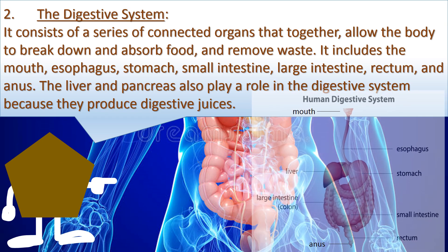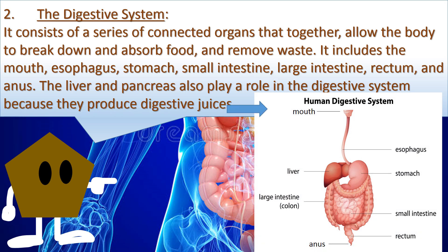2. Digestive system: it consists of a series of connected organs that together allow the body to break down and absorb food and remove waste. It includes the mouth, esophagus, stomach, small intestine, large intestine, rectum, and anus. The liver and pancreas also play a role in the digestive system because they produce digestive juices.